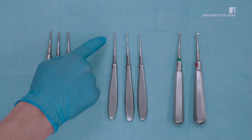There are three main groups of elevators: the Cooplands, Warwick James, and Criers.